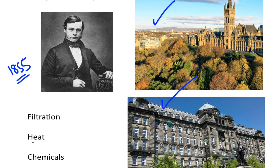Pasteur at the time was suggesting that to get rid of pathogens — disease-causing microorganisms — there were three possible techniques. One was filtration, the second was heat, and the third was the use of chemicals. So you can destroy the pathogenic microbes using one of these three techniques, according to Pasteur, the French scientist.